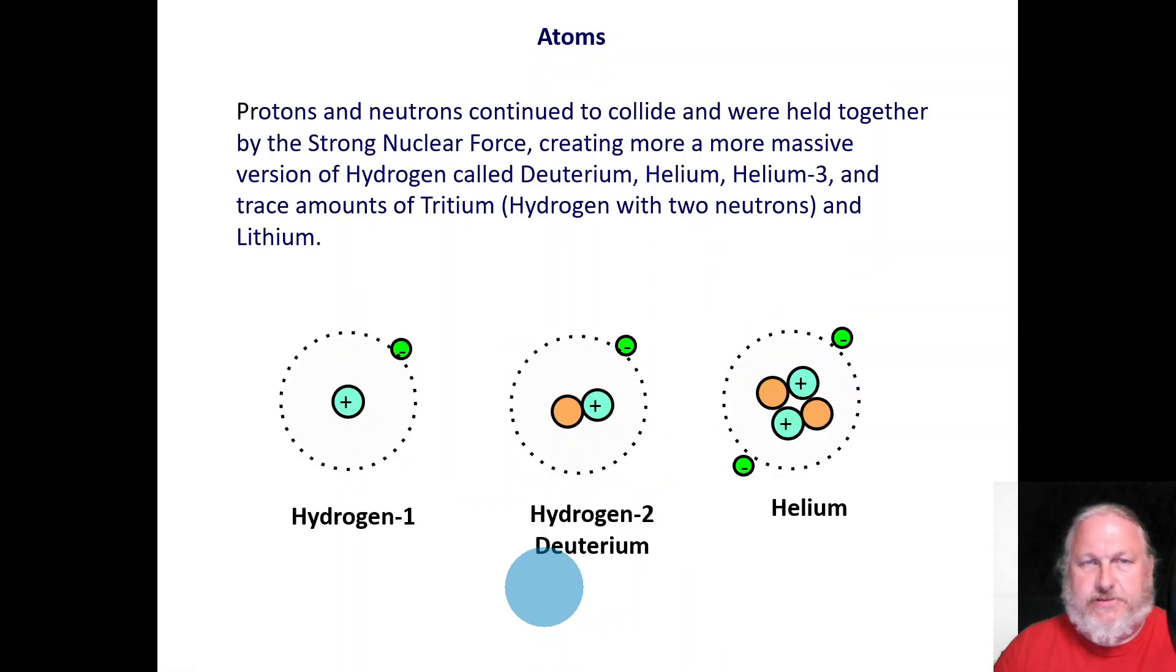Recall we were dealing with isotopes. Protons and neutrons continued to collide and they were held together by what we call the strong nuclear force. And these created more massive versions of hydrogen, different versions, and we call them deuterium. And then, two deuterium atoms would fuse together and would form helium, helium-3. And there would also be trace amounts of what we call tritium, hydrogen with two neutrons, and lithium, atomic number three, element number three.